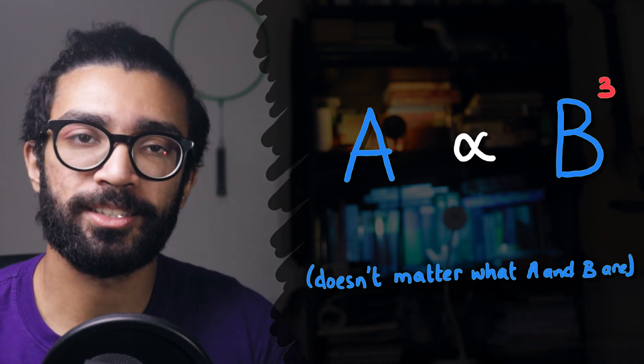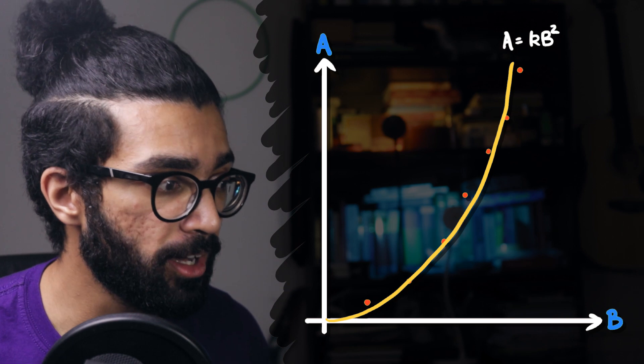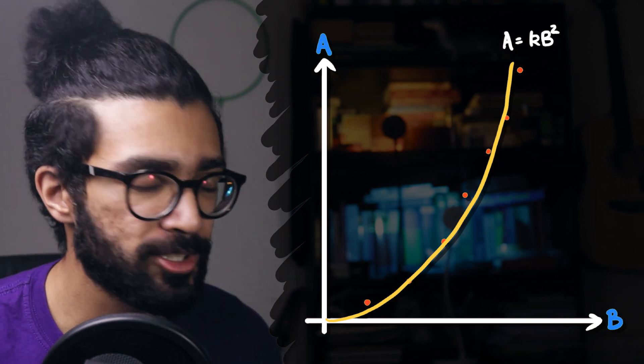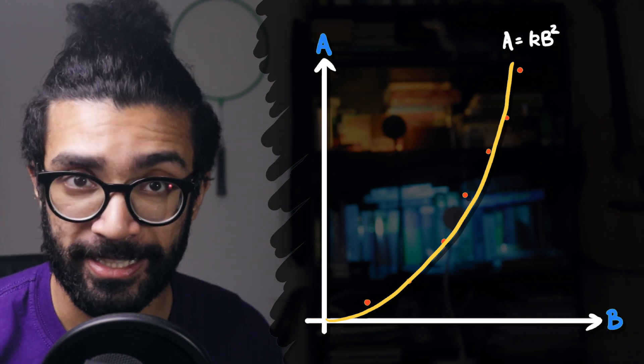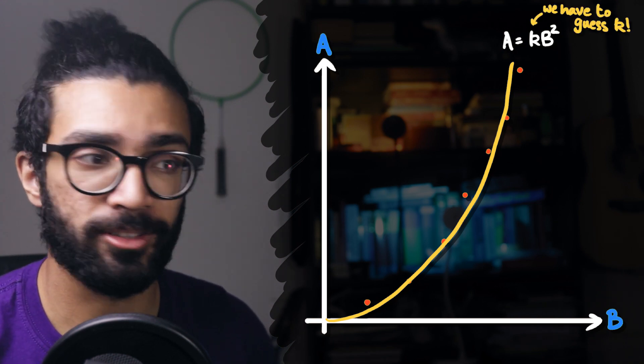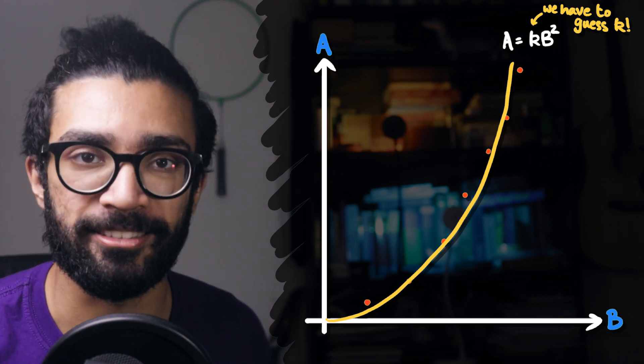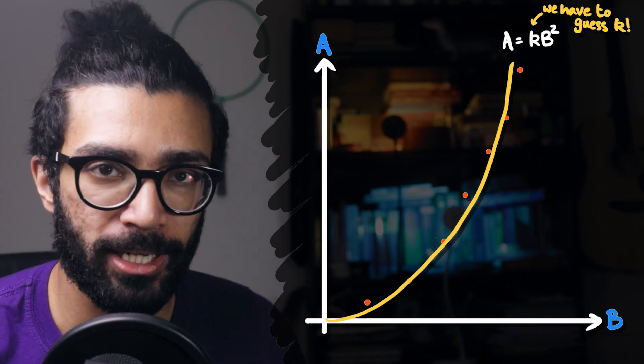The most basic one is to just plot A against B, and then to try and fit a curve of B squared or B cubed, depending on what theory tells us, to our data. This is highly problematic, because we have to make assumptions about the proportionality constant, and we have to try and fit different curves through data that isn't perfect. So we need a slightly better approach.